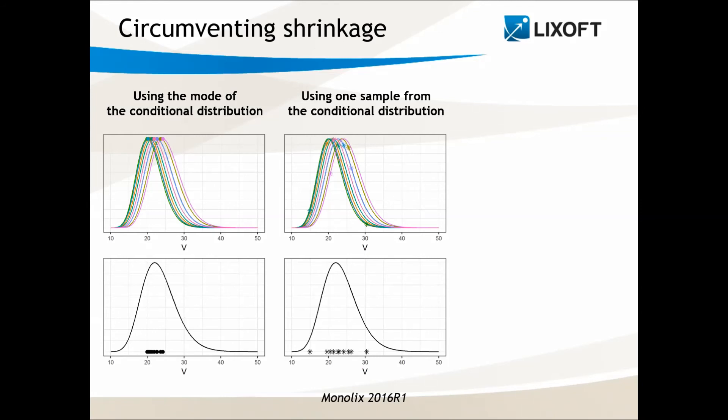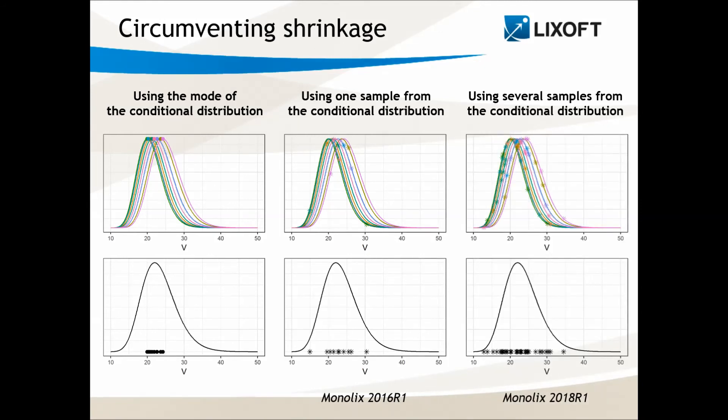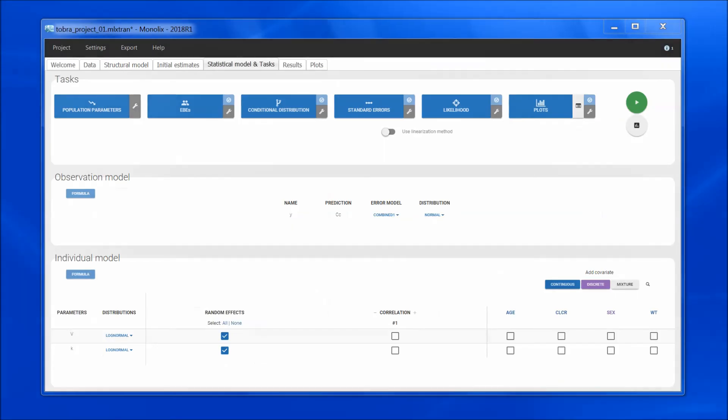But we can do even better. We can draw several samples for each individual to have even more points. This is what we do in the conditional distribution task, using a Markov chain Monte Carlo procedure. Once this task has been run...